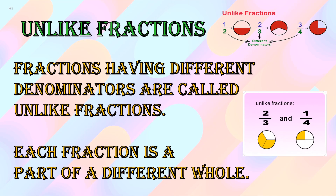Next we will learn unlike fractions. Fractions having different denominators are called unlike fractions. Jin fractions mein denominators different hoote hain, alag-alag hoote hain, those fractions are called unlike fractions. Each fraction is part of a different whole — har ek fraction jo hai, wo alag cheez ka part hoote hai, ek alag hole ka part hoote hai.